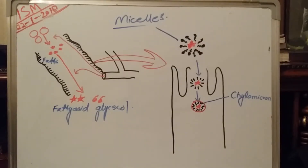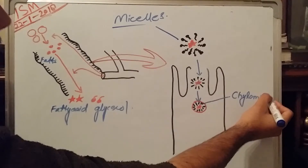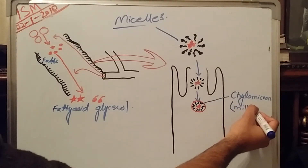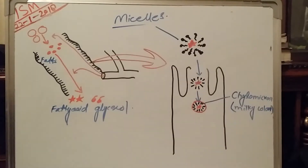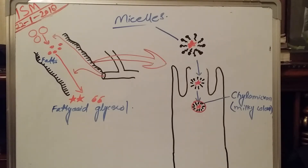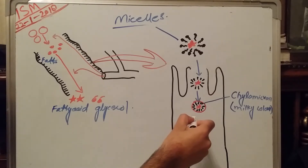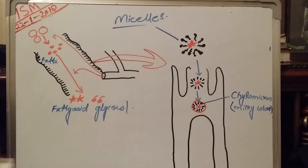This is now called a chylomicron, and the color of this chylomicron is milky in appearance — milky in color. So this chylomicron is then absorbed by the lacteals. As we know, our small intestine contains microvilli and villi, and in these villi there are smaller lymphatic vessels for the absorption of chylomicrons — for the absorption of glycerol and fatty acids. That structure is called a lacteal.